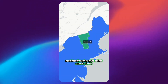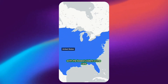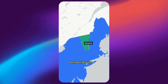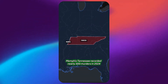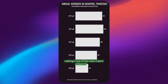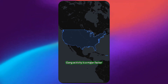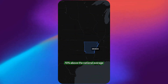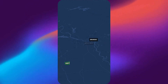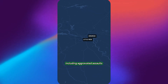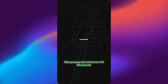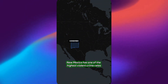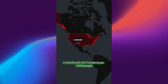Vermont consistently ranks as the safest state in the U.S. with the lowest violent crime rate. It has a small population, strong community policing, and low poverty rates contributing to its safety. Memphis, Tennessee recorded nearly 300 murders in 2024, making it one of the most violent cities in the U.S. — gang activity is a major factor driving the crime rate. Arkansas has a violent crime rate 70% above the national average; Little Rock, the state capital, sees the most violent crimes, including aggravated assaults. Albuquerque alone had over 9,000 assaults and 2,200 robberies in 2024. New Mexico has one of the highest violent crime rates in the U.S., with 10.7 incidents per 1,000 people.